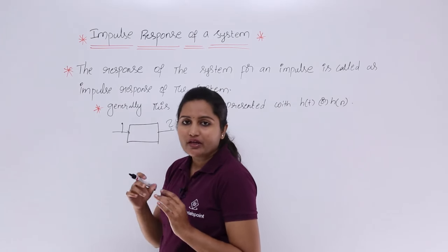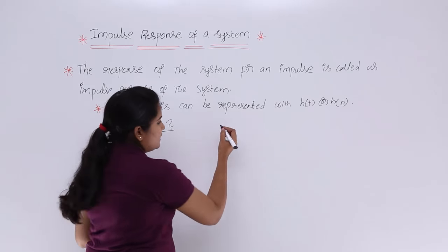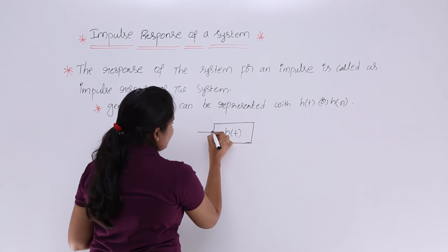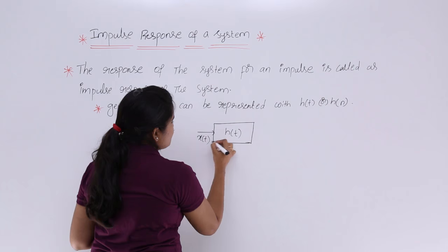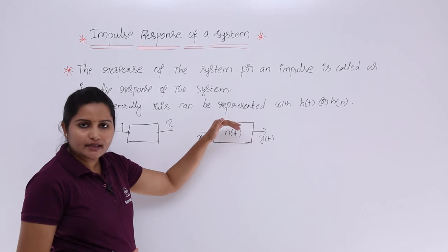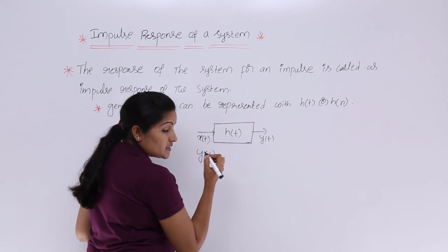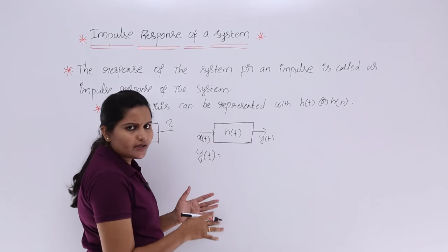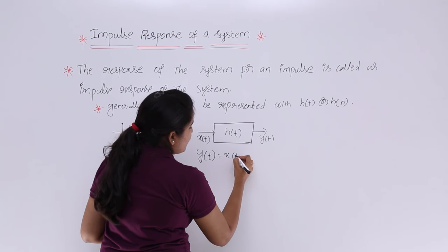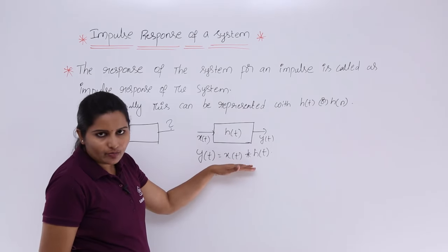The impulse response is very important to estimate the output of a system. For a system with impulse response h(t) and input x(t), if we consider output y(t), the relation between input, output, and impulse response can be written as: the output of an LTI system is equal to the input convolved with the impulse response. This is the time domain representation.